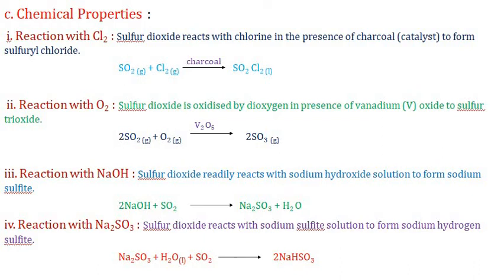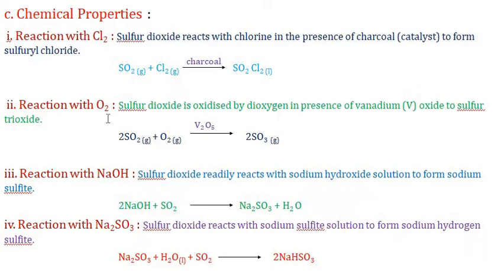Chemical properties of sulfur dioxide: First, reaction with chlorine — SO2 reacts with chlorine in the presence of charcoal to form thionyl chloride (SOCl2) or sulfuryl chloride (SO2Cl2). Thionyl chloride is used for the preparation of alkyl chlorides from alcohols. Second, reaction with oxygen — SO2 reacts with oxygen in the presence of vanadium pentoxide (V2O5) to form sulfur trioxide.